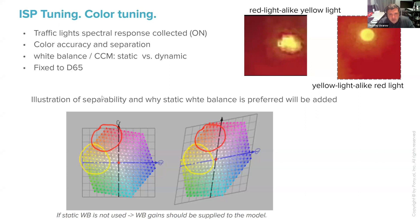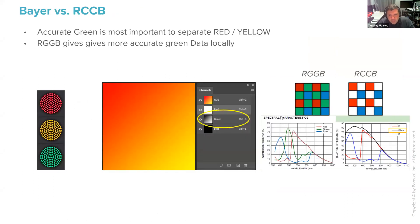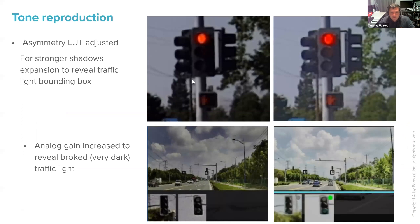Another question is which color filter array pattern is better. Many companies go with RCCB for better night vision due to better spectral response and sensitivity. However, we strongly recommend RGB for traffic lights, because spatial green information is very important when the traffic light is very small. Green is what differentiates red from yellow — red maximizes the red channel and minimizes blue, and green is the differentiator — so accurate per-pixel green information is critical.